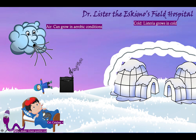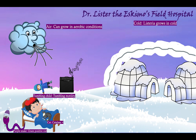The sick kid has a cat friend to remind you that Listeria is a catalase-positive organism. That's important in the context of chronic granulomatous disease, which makes patients susceptible to catalase-positive organisms. The kid is doing cartwheels in the cold, tumbling around — to remind you that Listeria has tumbling motility.